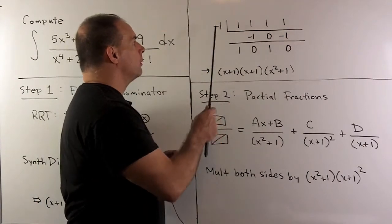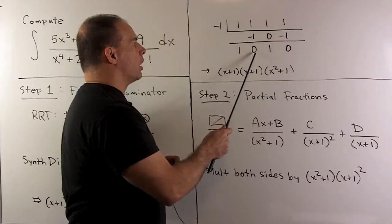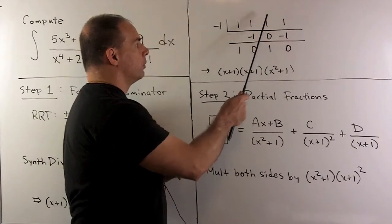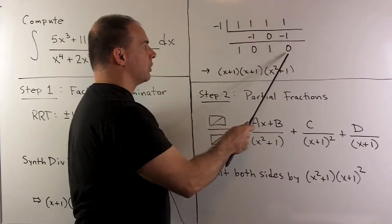That means we can do synthetic division again. We drop our 1, multiply by minus 1, we get a 0. Multiply by minus 1, we get another 0. We drop, we get a 1. Minus 1 by 1 gives me a minus 1, we get a 0.